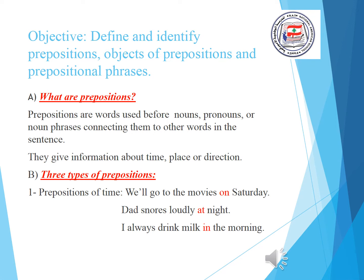What are prepositions? Prepositions are words used before nouns, pronouns, or noun phrases connecting them to other words in the sentence. They give information about time, place, or direction. There are three types of prepositions: prepositions of time, prepositions of place, and prepositions of direction.